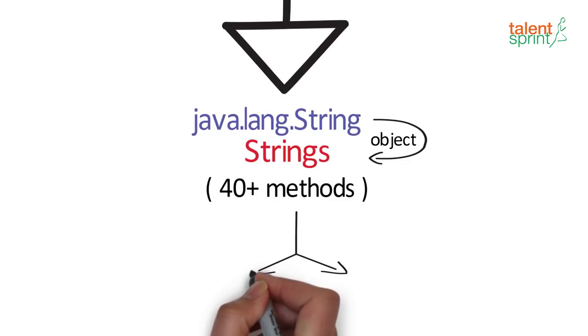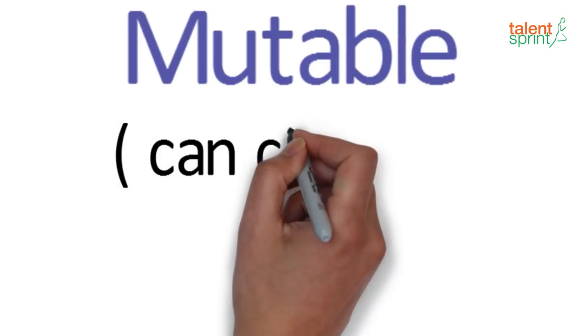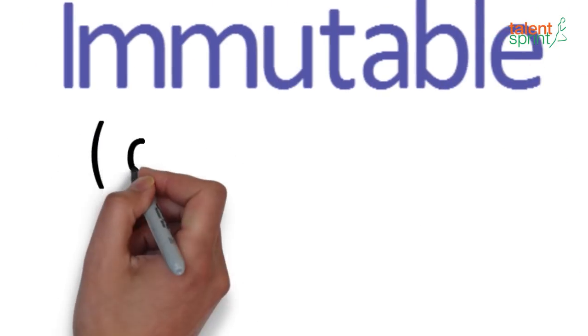Before we get to these methods, in an object-oriented programming language, objects are classified as mutable or immutable. Mutable and immutable are English words meaning can change and cannot change, respectively.